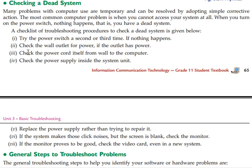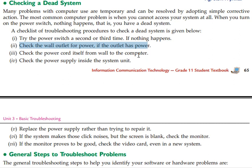A checklist of troubleshooting procedures to check a dead system is given below. Check the power cord itself from the wall to the computer. Then check another power column. Then the next step: check the power supply inside the system unit. Let's check inside the system unit.